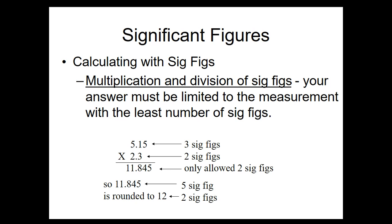For example, we have 5.15 times 2.3. When figuring out how to write our answer, 5.15 has three significant figures and 2.3 has two significant figures. This means once we get our answer on our calculator, we're going to round to the same number of significant figures as 2.3, since 2.3 has the least number of significant figures. Therefore, our answer is going to be 12, with only two significant figures.